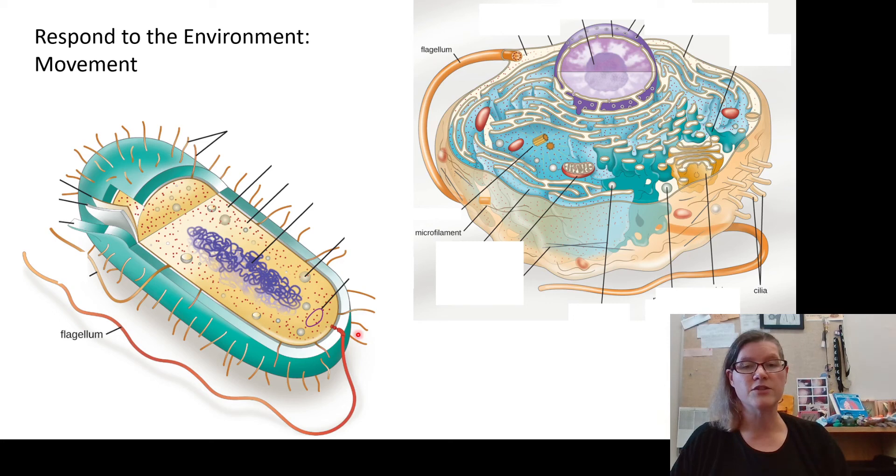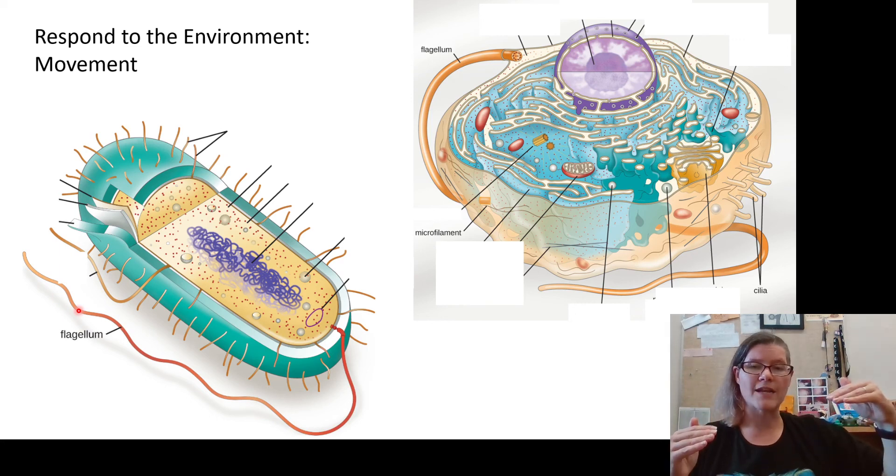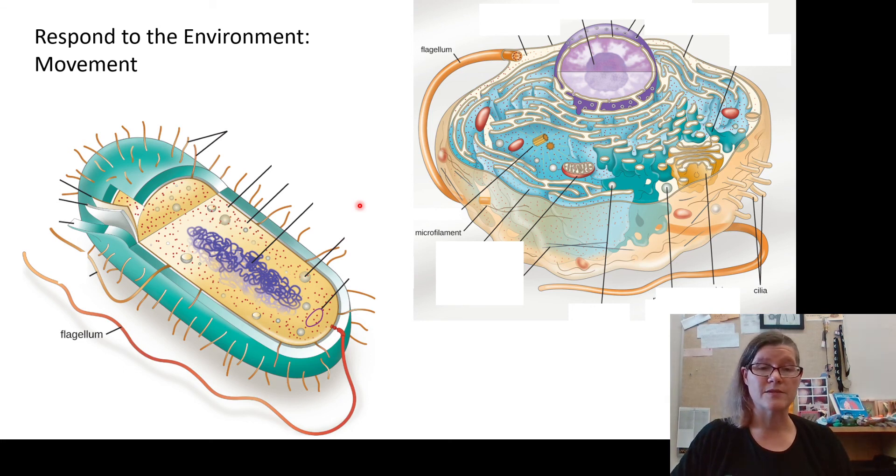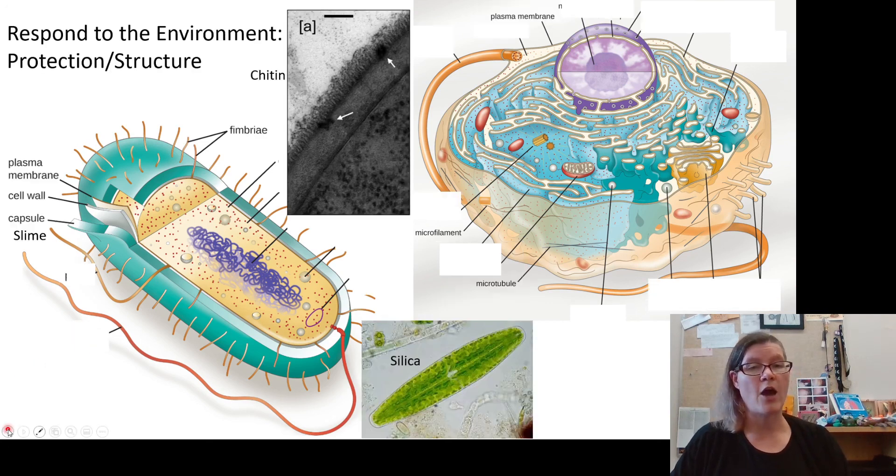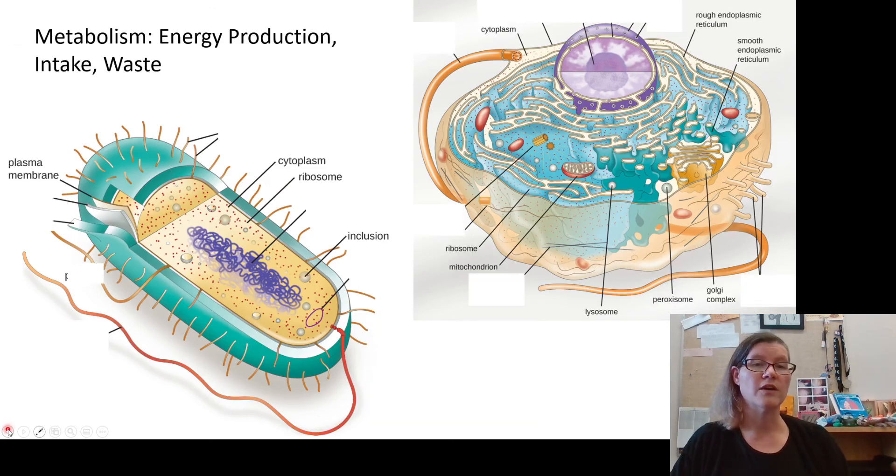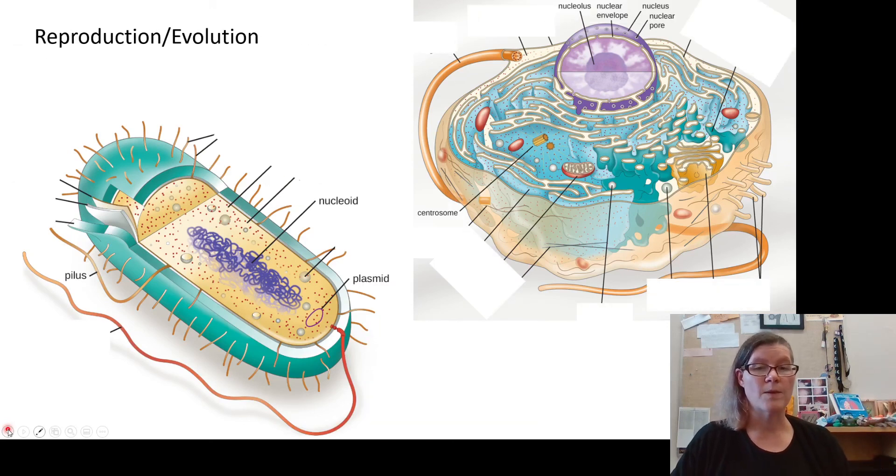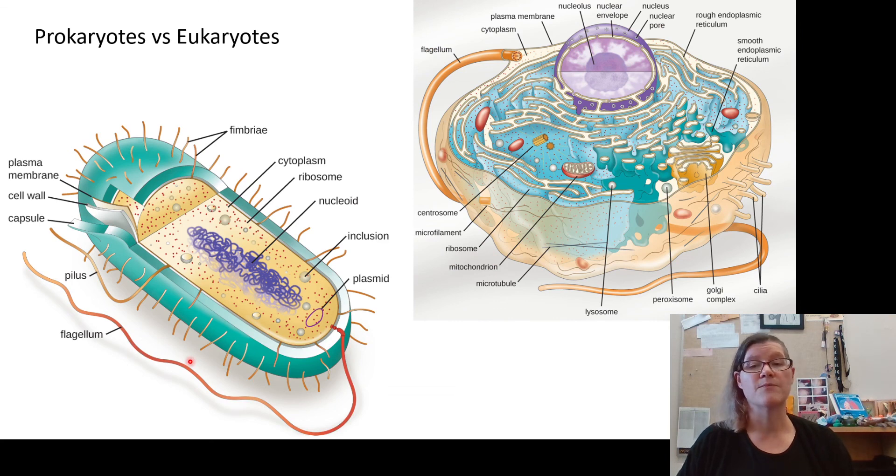Interestingly enough, prokaryotes do have flagella to help them move, but they're different. They're made out of a different type of protein structure and they're controlled in a different way. Also, many prokaryotes have more than one flagella, and sometimes in interesting places. So they'll have them one on each end or scattered throughout the cell. A big part of all of these structures, as we consider them and how they look, is thinking not only what they do, how they help with movement, protection, structure, metabolism, reproduction, and evolution, but also how we use them for classification.